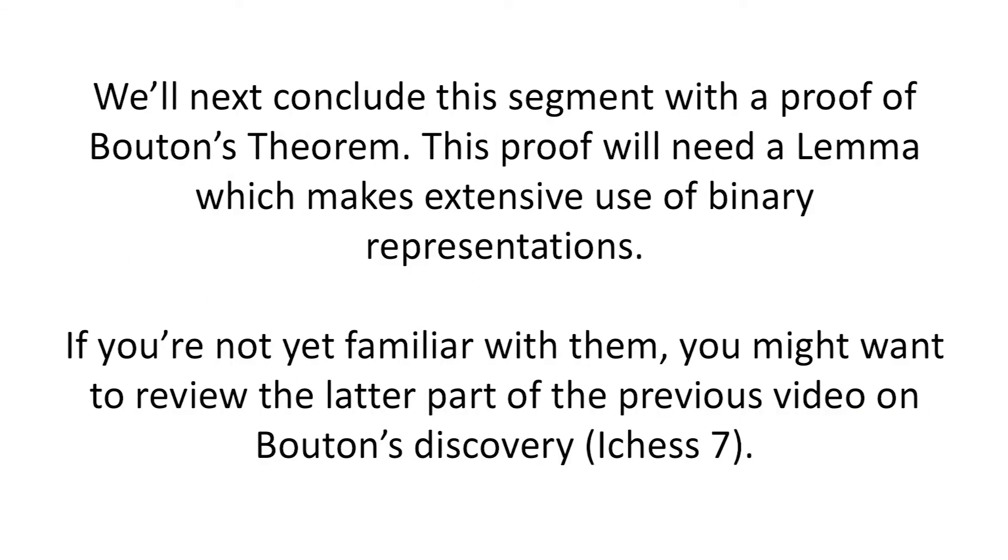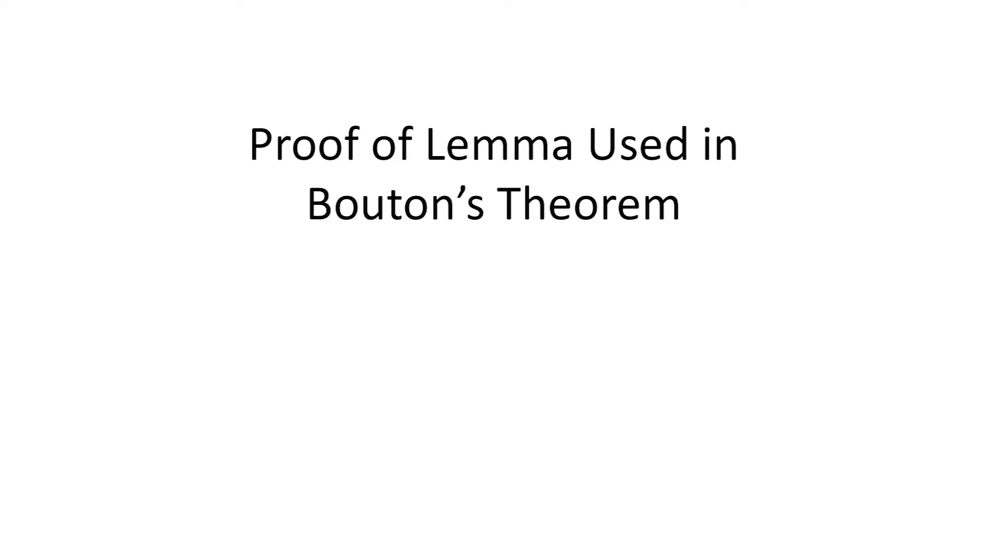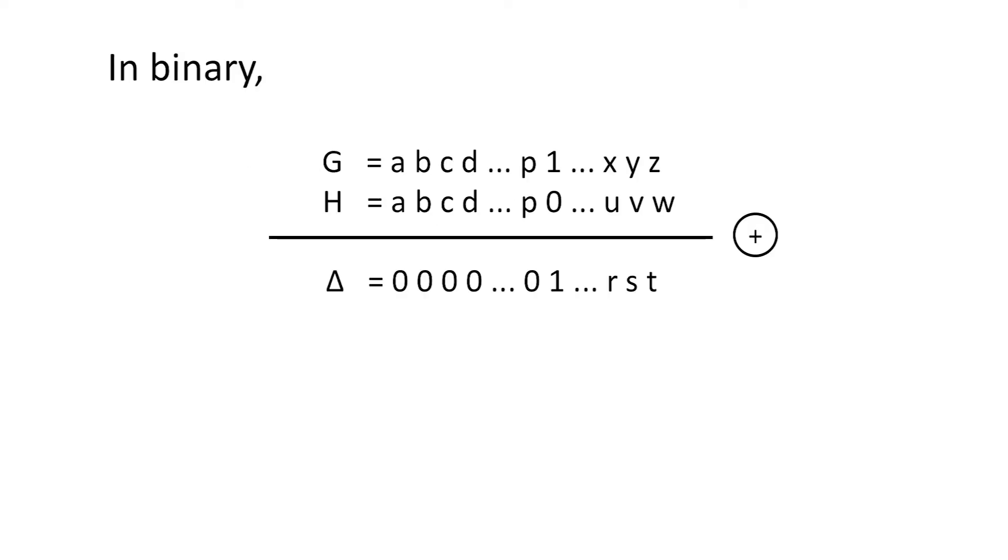We'll next conclude this segment with a proof of Botan's theorem. This proof will need a lemma which makes extensive use of binary representations. If you're not yet familiar with them, you might want to review the latter part of the previous video on Botan's discovery. The proof of Botan's theorem will use the following lemma: if G and H are two binary numbers whose nim sum is delta, then in the leftmost column in which delta has a ones bit, the larger of G and H contains a ones bit and the smaller contains a zero bit. To show this, write G and H in binary and call their nim sum delta.